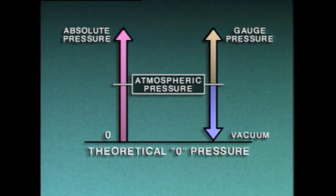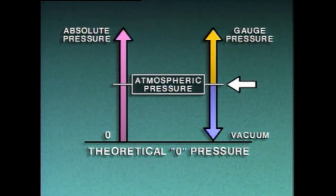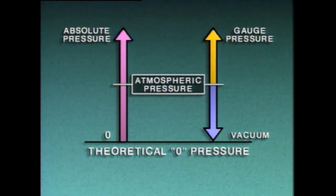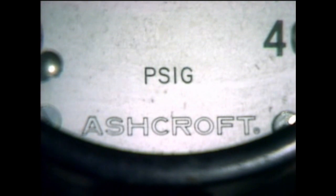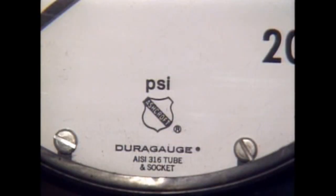Another type of pressure scale is the gauge pressure scale. The gauge scale starts at atmospheric pressure rather than at theoretical zero pressure. Since atmospheric pressure serves as the starting point, it's given a value of zero on the gauge scale. On an instrument that uses the gauge scale, pressure is indicated in pounds per square inch gauge, or PSIG. But sometimes gauge scale values are expressed simply as PSI.